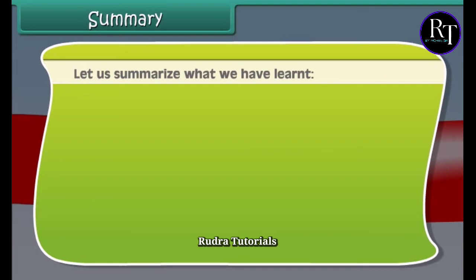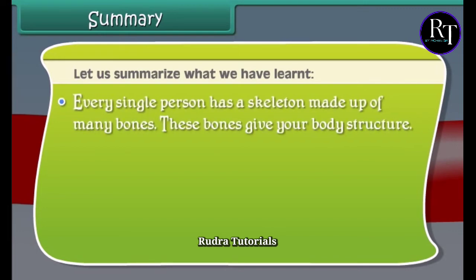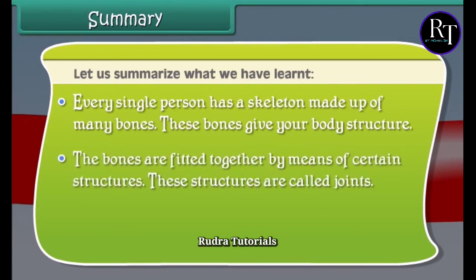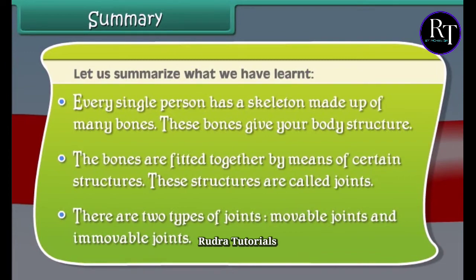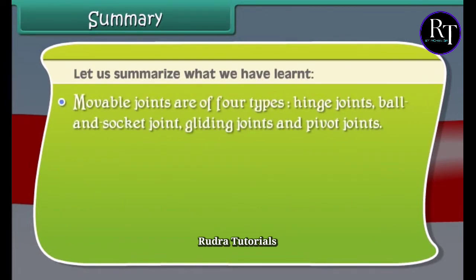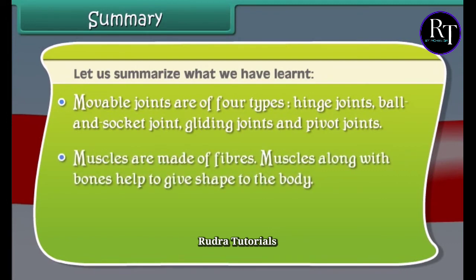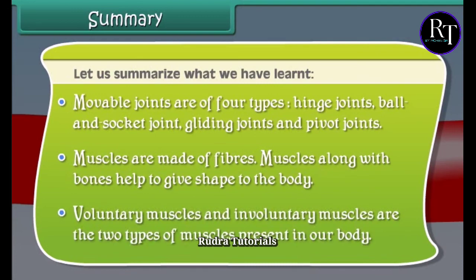Let us summarize what we have learned. Every single person has a skeleton made up of many bones, and these bones give our body structure. The bones are fitted together by structures called joints. There are two types of joints: moveable and immovable. Moveable joints are of four types: hinge joints, ball and socket joints, gliding joints, and pivot joints. Muscles are made of fibers and, along with bones, help give shape to the body. Voluntary muscles and involuntary muscles are the two types of muscles present in our body.